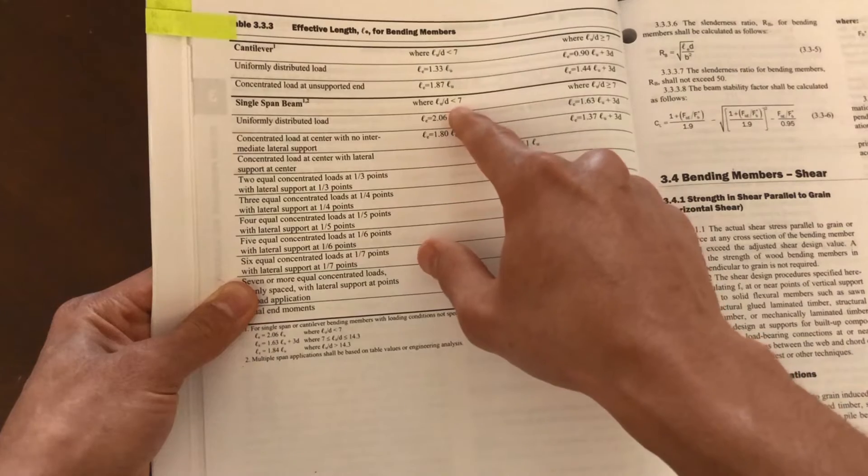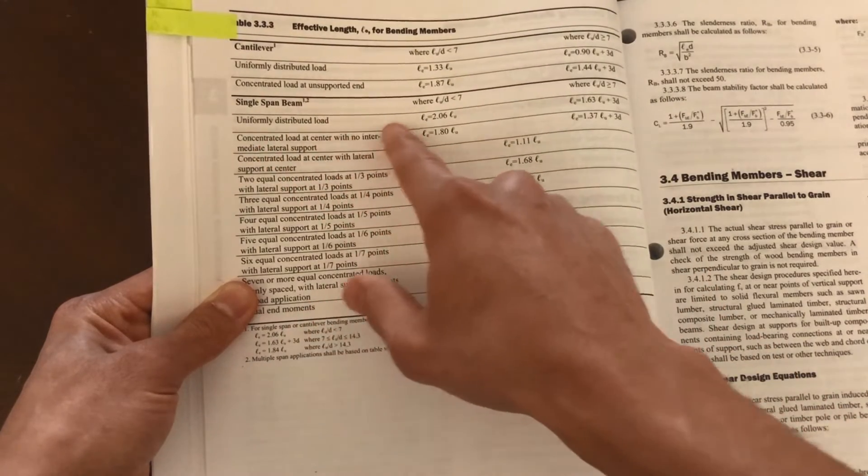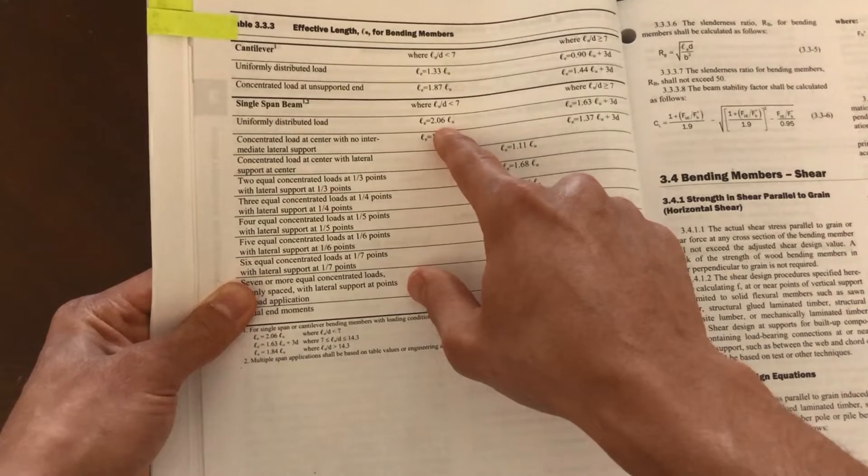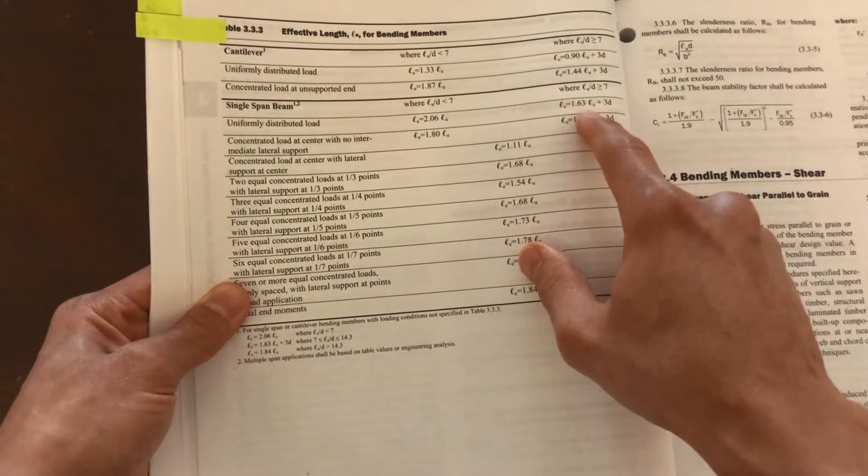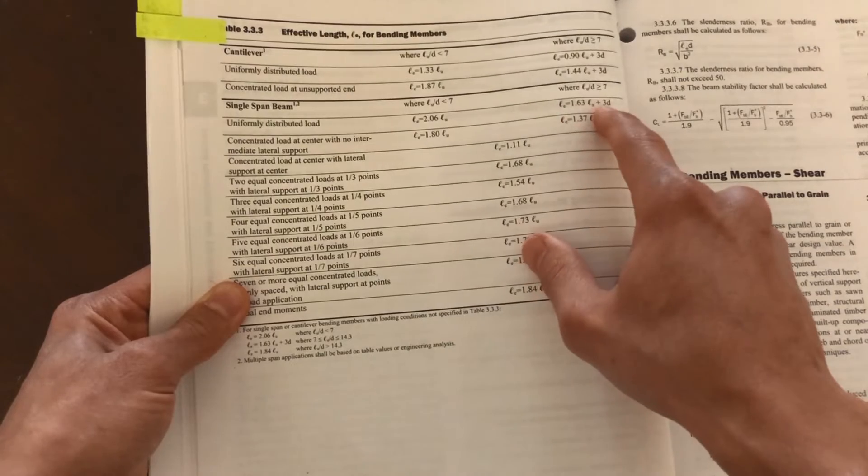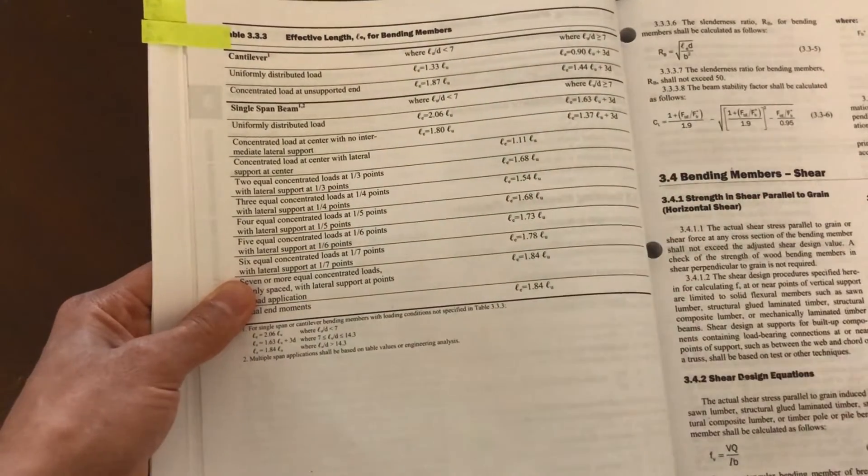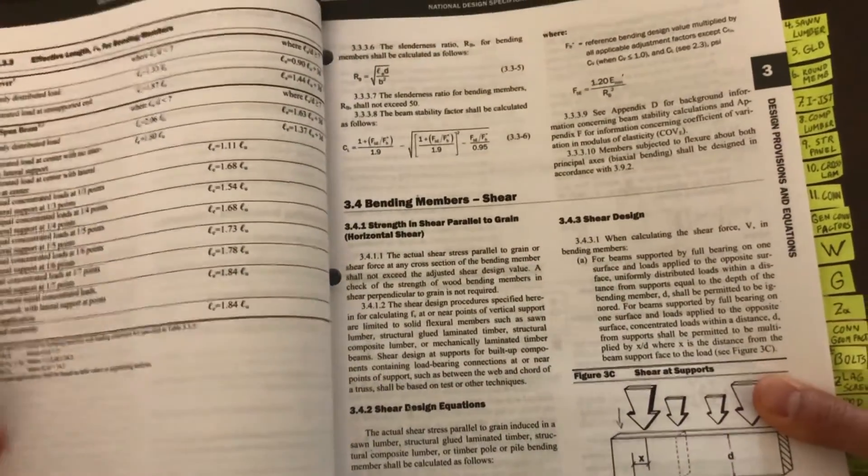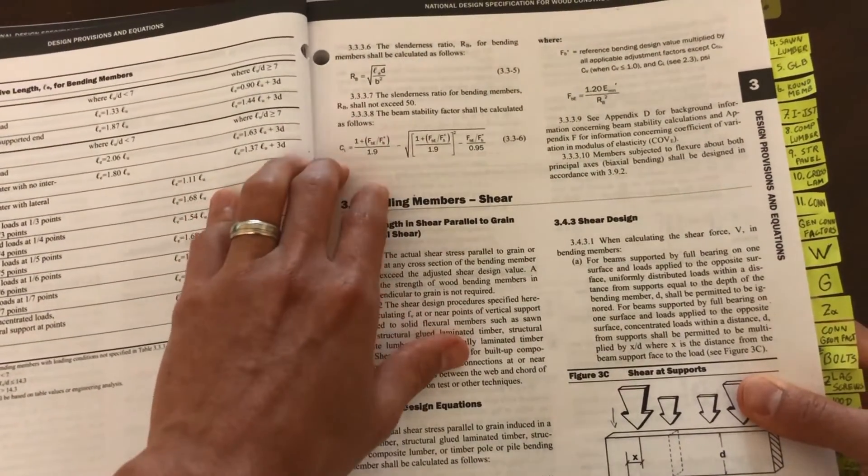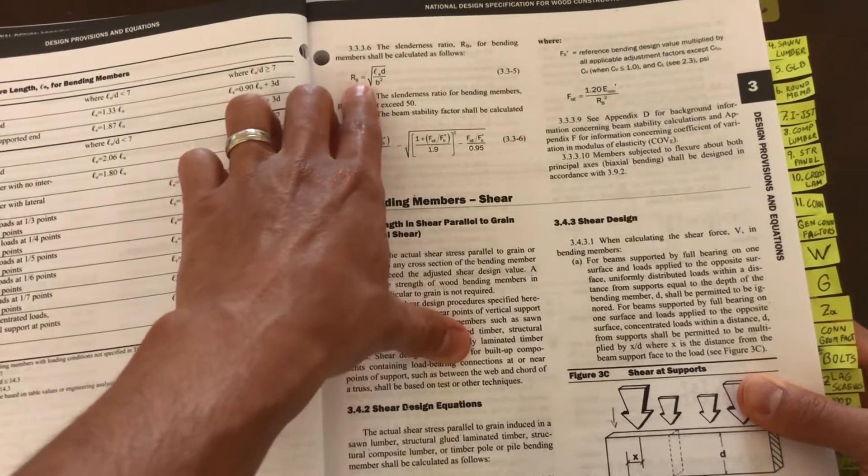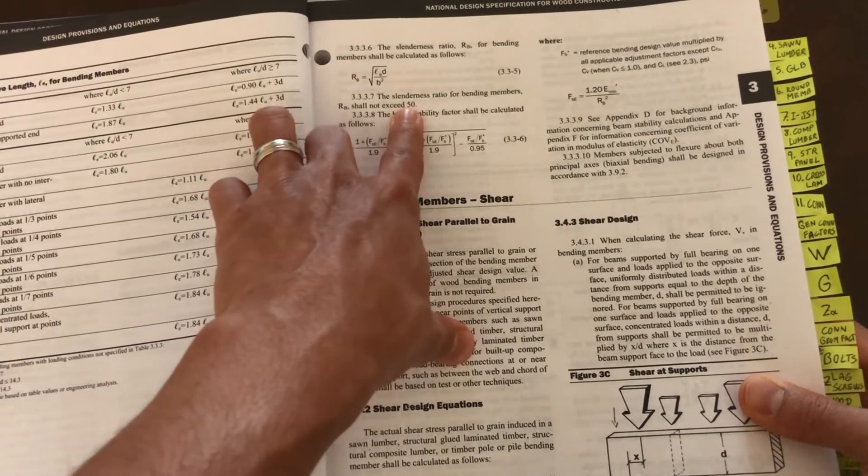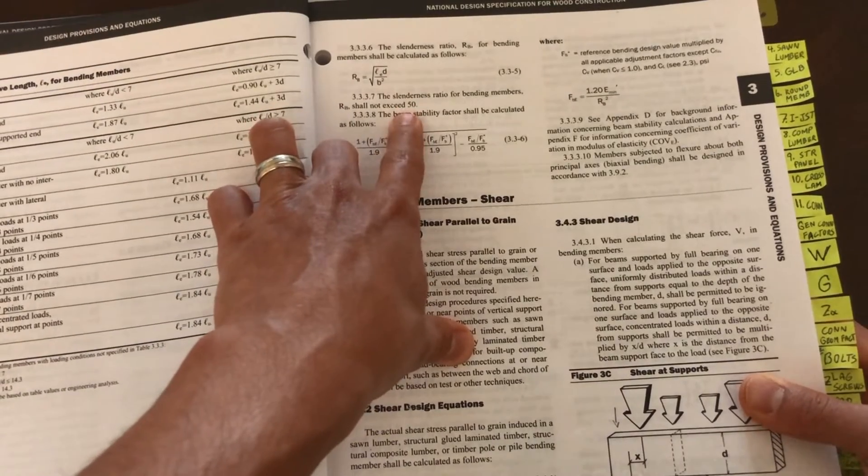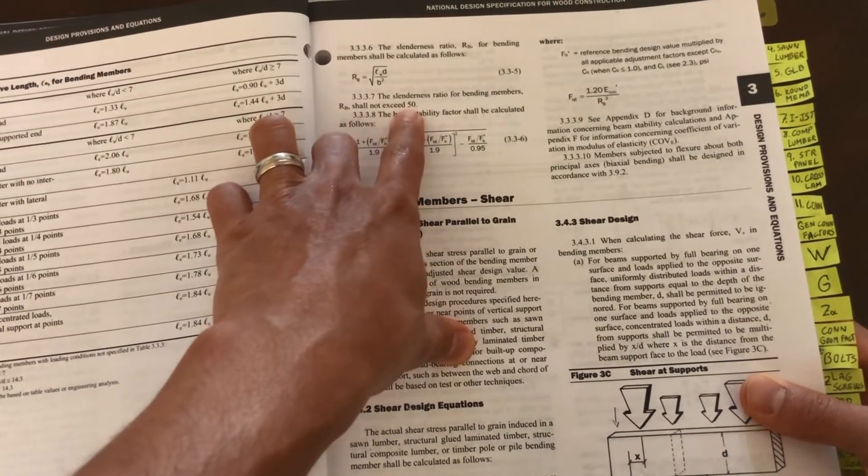For a single span with uniformly distributed load, then we would use this formula. Once we do that, we can then calculate R sub B, which is the slenderness ratio.